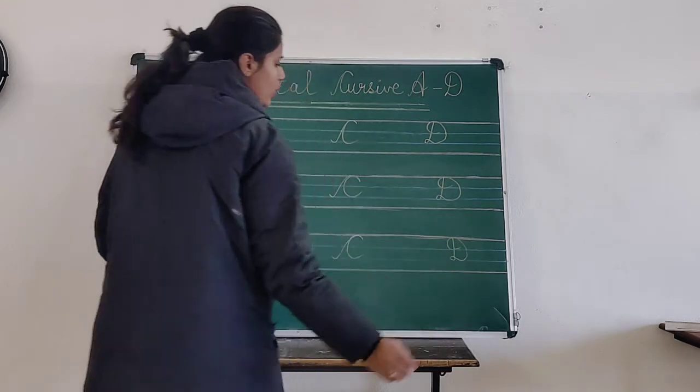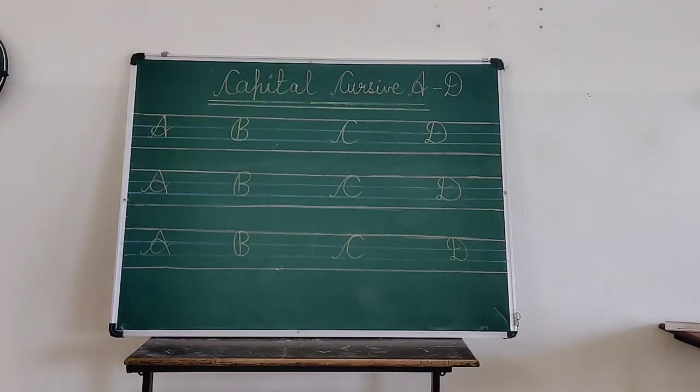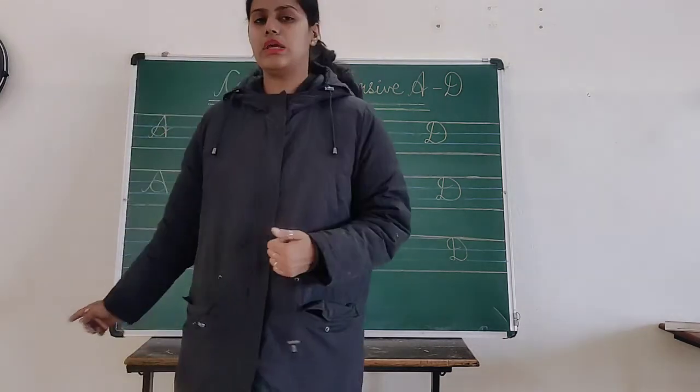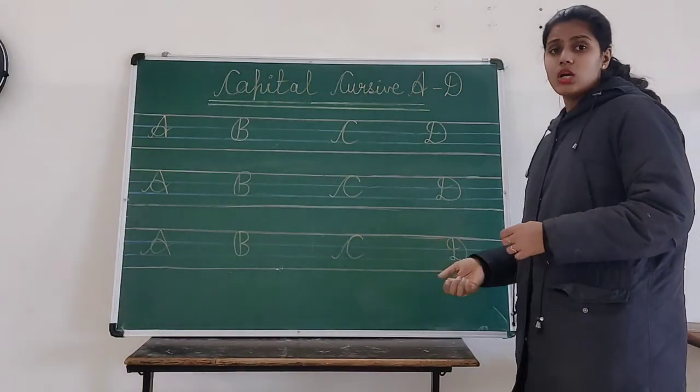Okay students, so today we have learned A for apple, B for ball, C for cat, and D for dog.